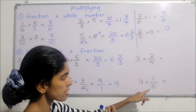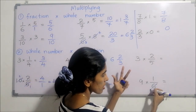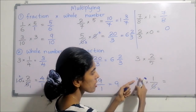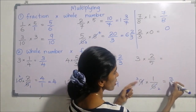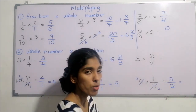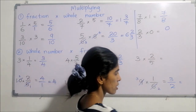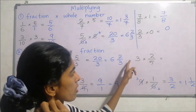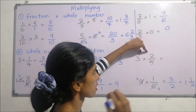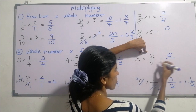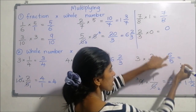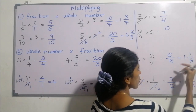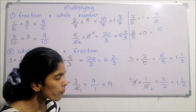Nine and six are divisible by three — simplify: three times two is six, three times three is nine, then multiply remaining numbers to get three over two, which is improper — one and a half. Next example: cannot cancel, so multiply two times three is six over five — improper, giving one and one fifth. Follow the method for converting improper fractions into mixed numbers.